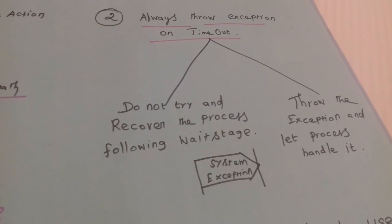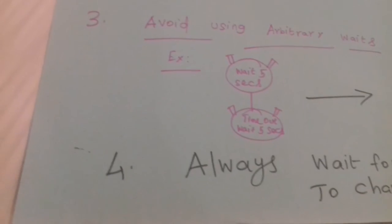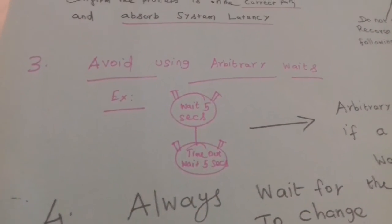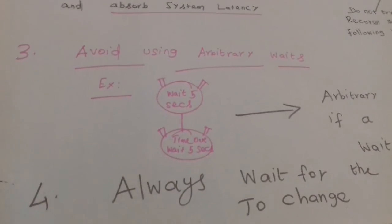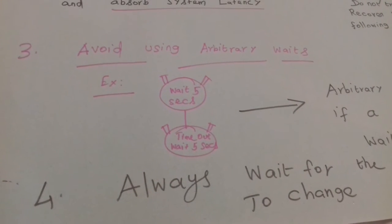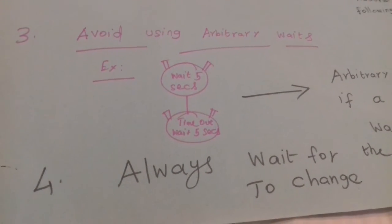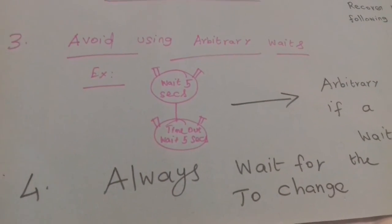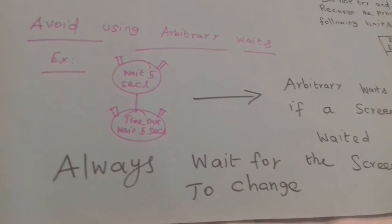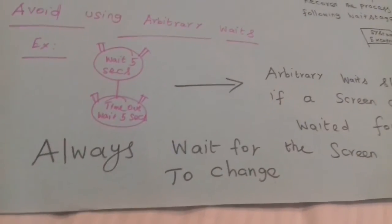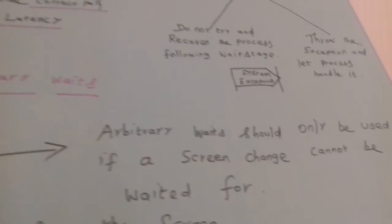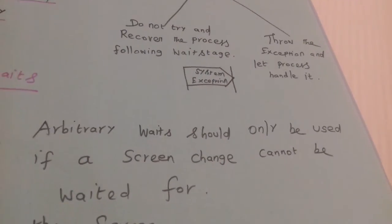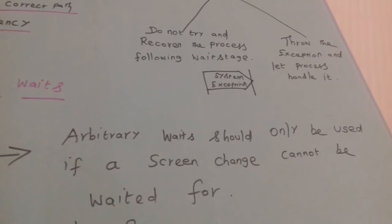One more thing is whenever you are using object actions wait stage, you have to avoid using arbitrary waits. It means wait five seconds, default you give some values, right? That timeout is arbitrary waits. You have to avoid that.